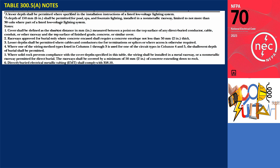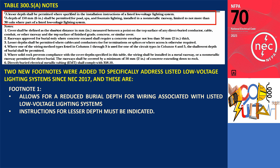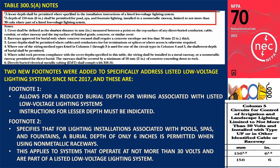We must also understand the notes below this table. Two new footnotes were added to address listed low-voltage lighting systems since NEC 2017. Footnote 1 allows for a reduced burial depth for wiring associated with listed low-voltage lighting systems, provided that the installation instructions for the specific system indicate a lesser depth. Footnote 2 specifies that for lighting installations associated with pools, spas, and fountains, a burial depth of only 6 inches is permitted when using non-metallic raceways. This applies to systems operating at not more than 30 volts that are part of a listed low-voltage lighting system. These footnotes apply to circuits in Column 5 — irrigation and landscape lighting limited to not more than 30 volts, installed with type UF or other identified cable or raceway.